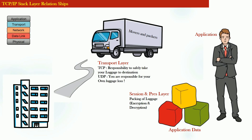The new apartment that this gentleman is shifting to is like a destination IP address. The road can be thought of as the network layer, because the road is a path from your current residence to your new residence — the network layer is responsible for taking your data from the source machine to the destination machine.